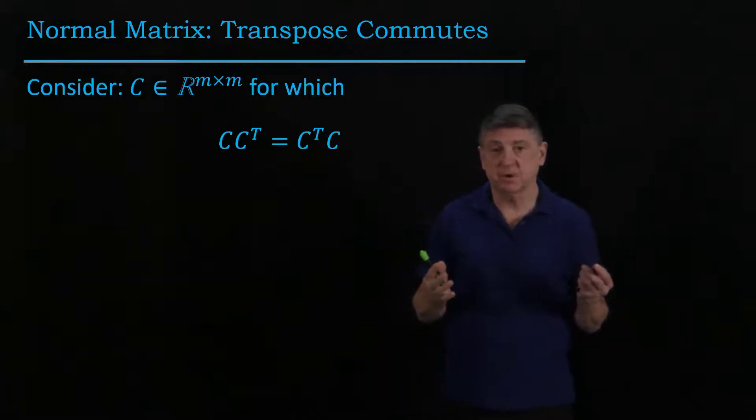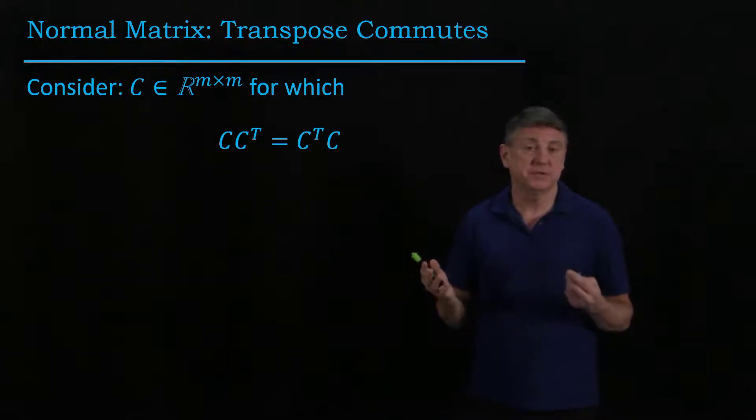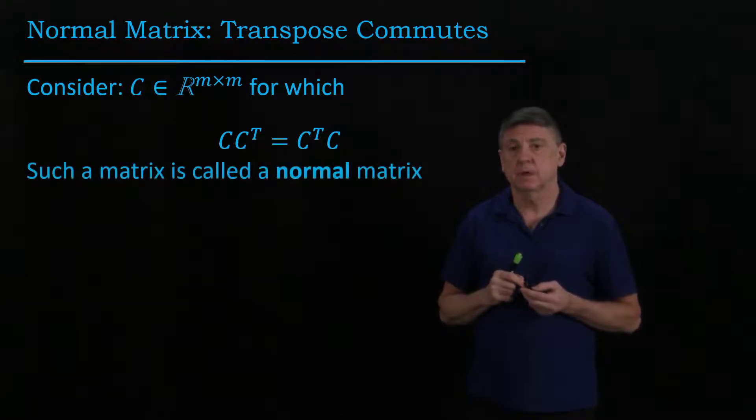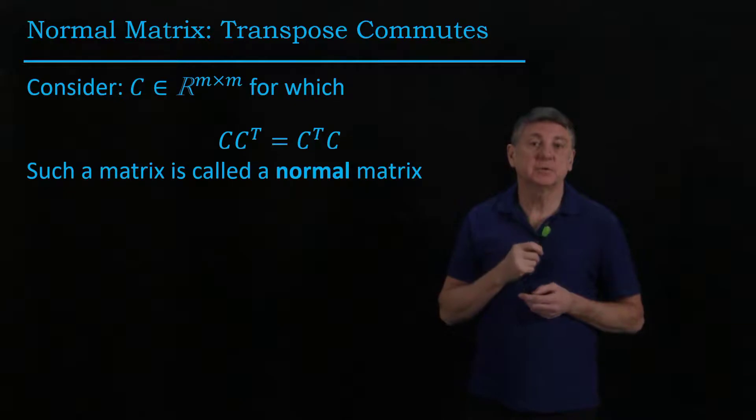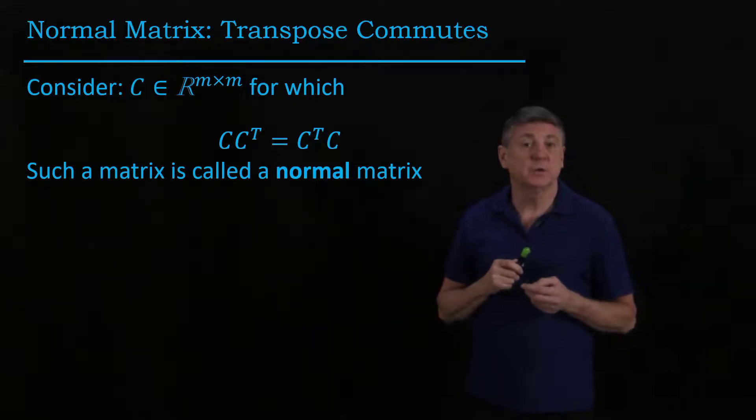Not all matrices have this property, and of course if you have two matrices A and B, in general they don't commute. When we have this property that it commutes with its own transpose, we call it a normal matrix.